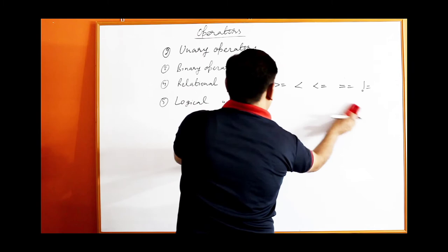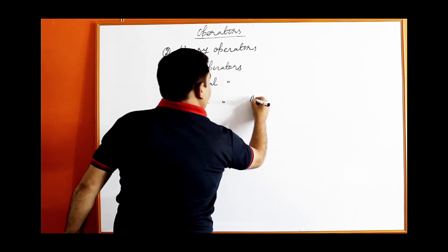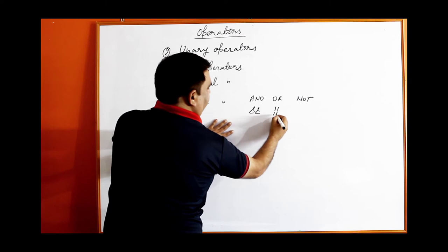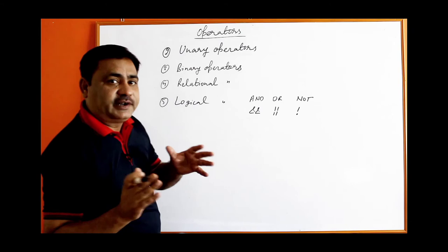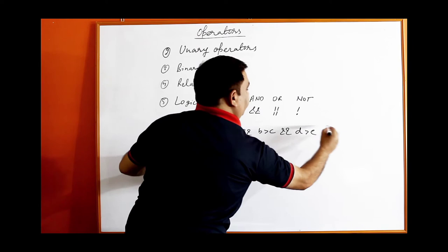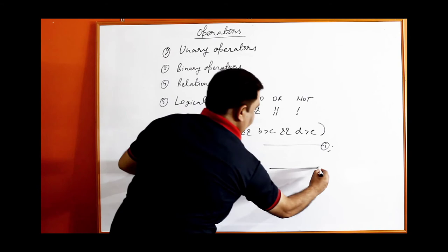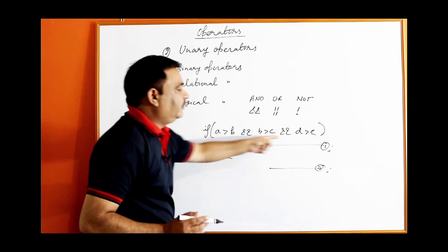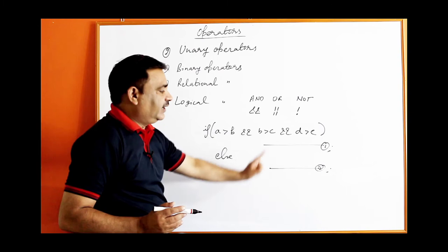Logical operators: there are three — AND (&&), OR (||), and NOT (!). If we have multiple conditions like if a is greater than b AND b is greater than c AND d is greater than e, then with AND: if even one condition is false the complete condition becomes false and the else block executes. Only if all conditions are true will the first statement execute.